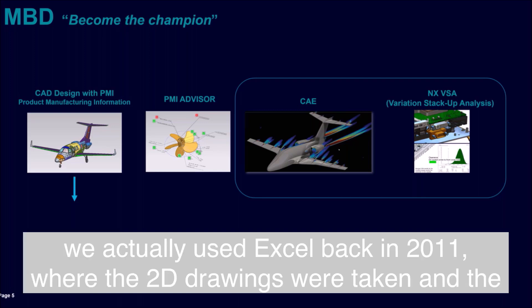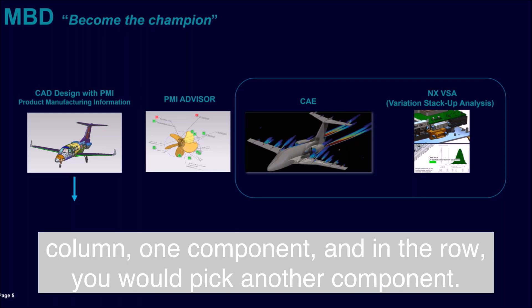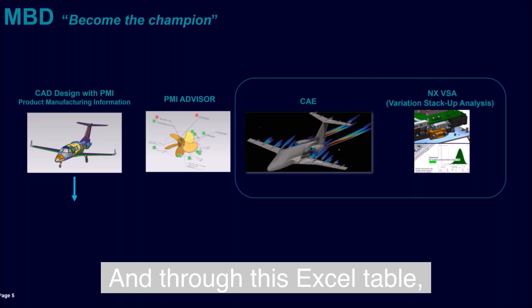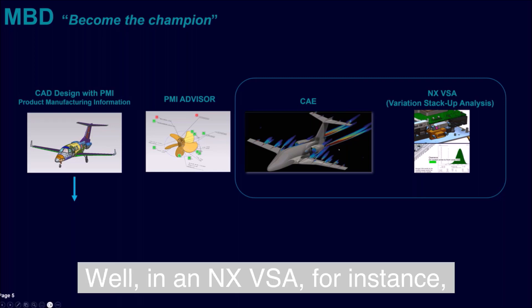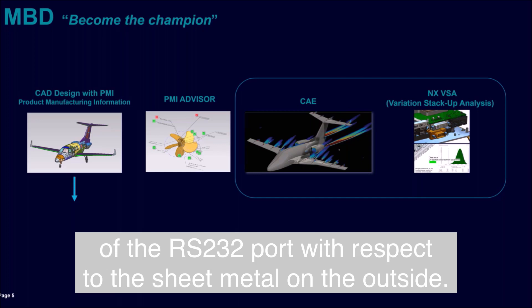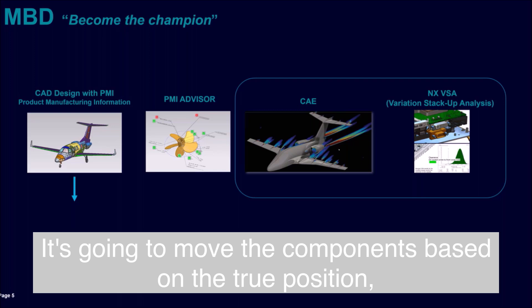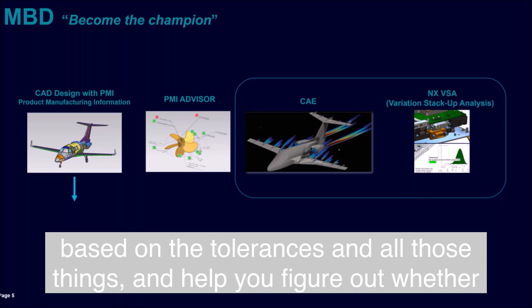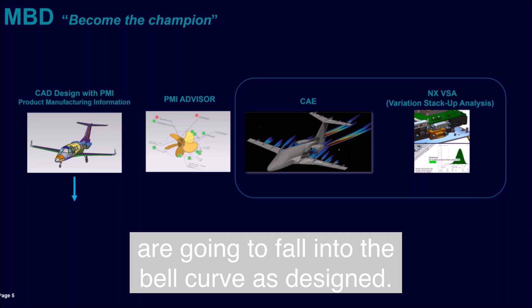At a company I worked at back in 2011, we used Excel where 2D drawings were taken and the tolerances, datums, and hole callouts were all interpreted into Excel. Through that table you could pick one component in a column and another in a row to see the variations between two parts. In NX VSA, for instance, you could see the position of an RS-232 port relative to sheet metal on the outside — it actually animates the components based on true position and tolerances, helping you figure out whether you're set up for success and whether the bulk of your assemblies fall into the bell curve as desired.